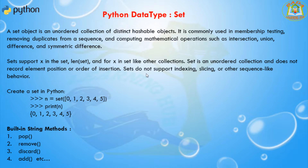A set object is an unordered collection of distinct hashable objects. It is commonly used in membership testing, removing duplicates from a sequence, and computing mathematical operations such as intersections, unions, differences, and symmetric differences. These are all done by using sets.